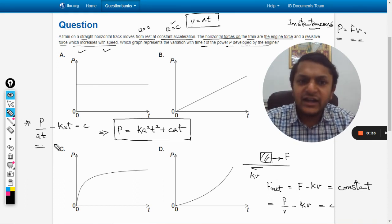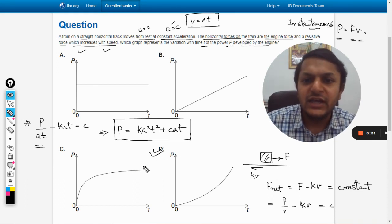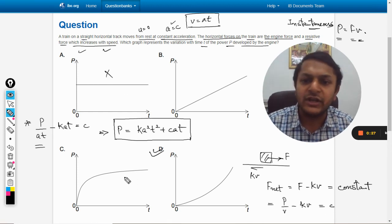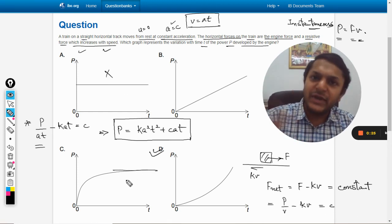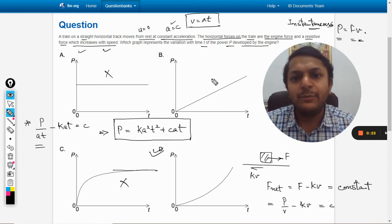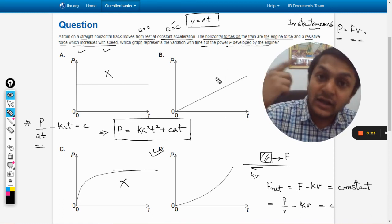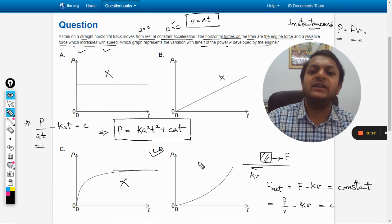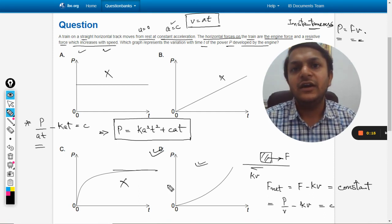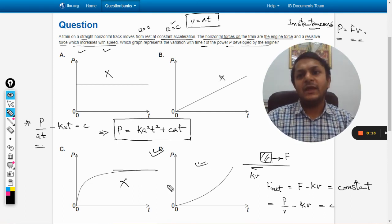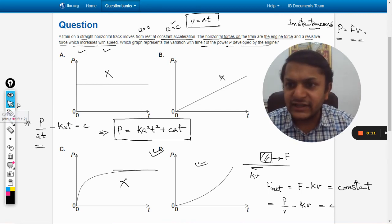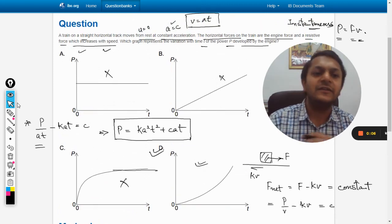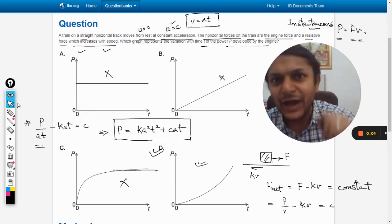We have clearly proved that the answer should be D. Power will not be constant. Power will not increase in a linear fashion - it will increase continuously in a parabolic way. Let us verify the answer, and yes, the answer is D. All the best, bye.